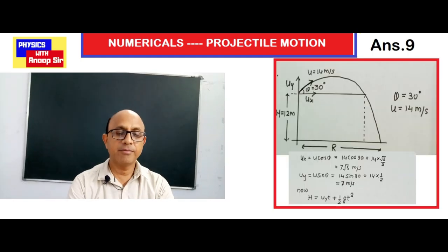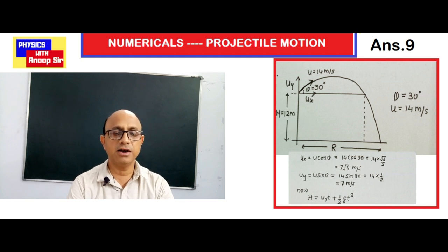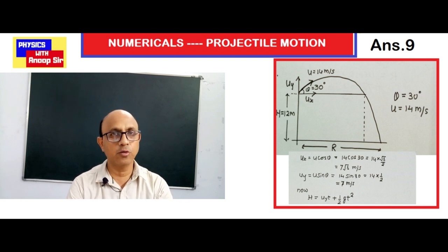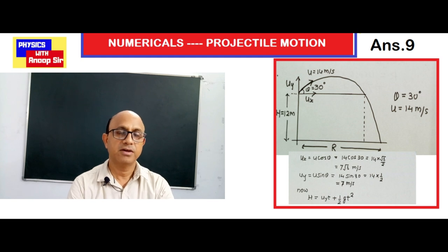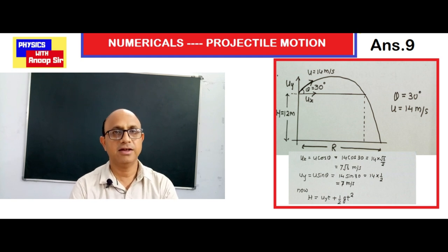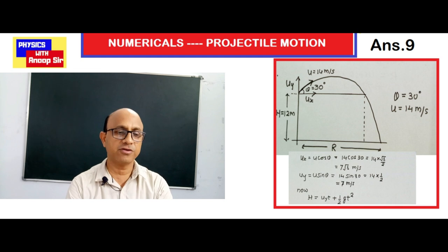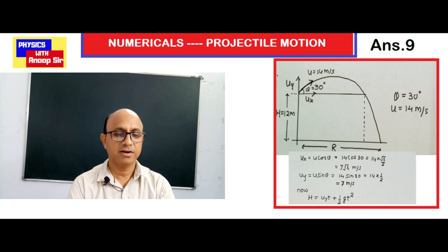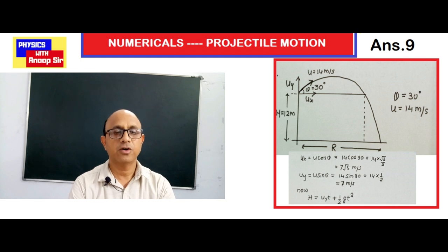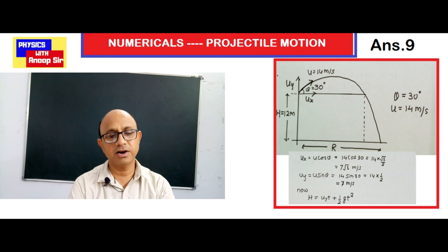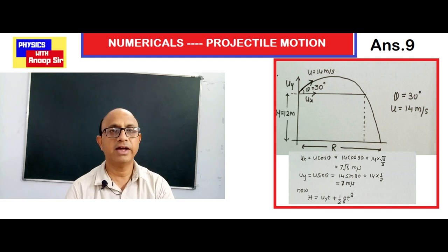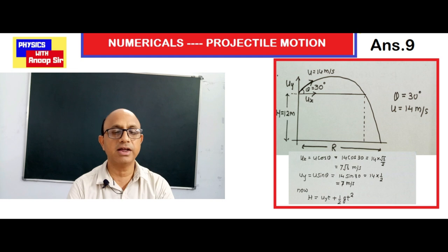In this question, a player throws a ball at 14 meter per second at 30 degrees from the horizontal in the upward direction. The ball rises and then falls to the ground. The difference here is that a height of 12 meters is given, and range R is unknown. Velocity is 14 meter per second at 30 degrees.